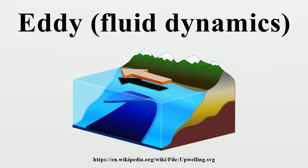In fluid dynamics, an eddy is the swirling of a fluid and the reverse current created when the fluid flows past an obstacle. The moving fluid creates a space devoid of downstream flowing fluid on the downstream side of the object. Fluid behind the obstacle flows into the void creating a swirl of fluid on each edge of the obstacle, followed by a short reverse flow of fluid behind the obstacle flowing upstream toward the back of the obstacle. This phenomenon is most visible behind large emergent rocks in swift flowing rivers.